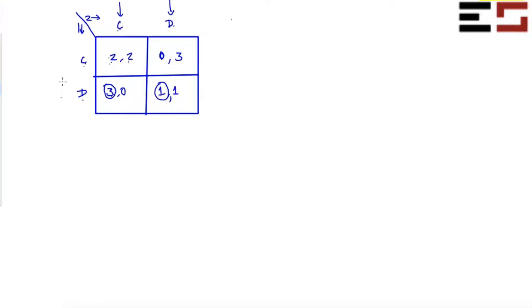Now I'm going to figure out player two's best response. I fix player one's action to C and figure out player two's best response. Given that player one plays C, player two benefits from playing D compared to C, because D gives three and C gives two. So I'm going to put a rhombus around three.